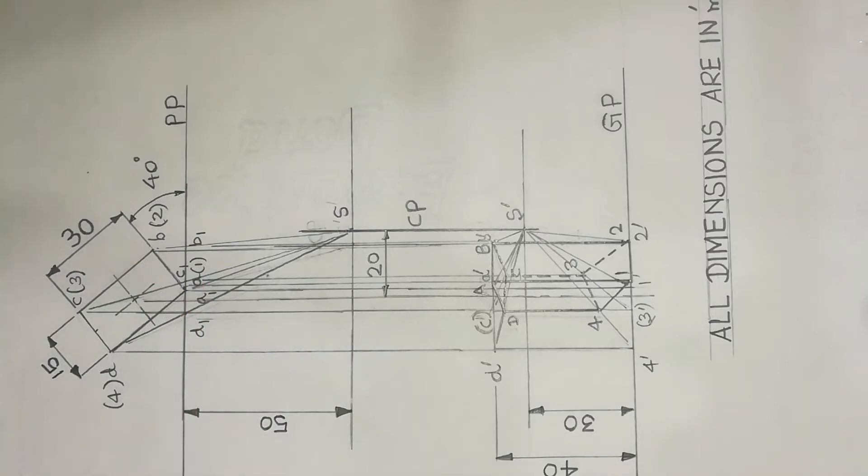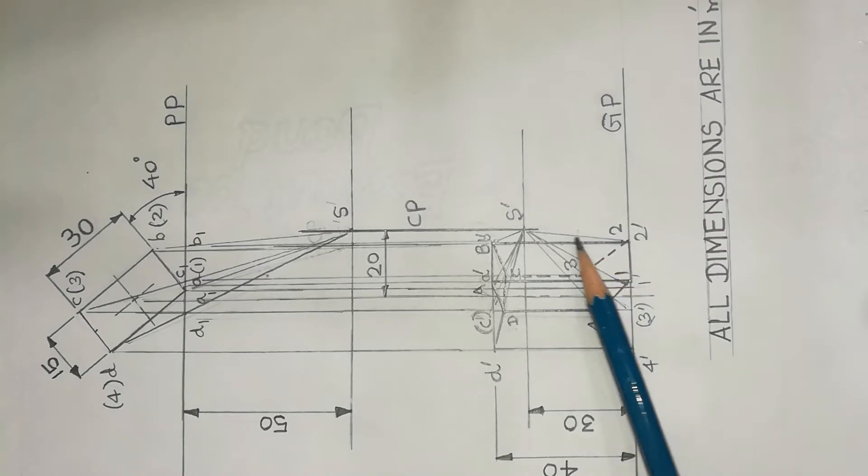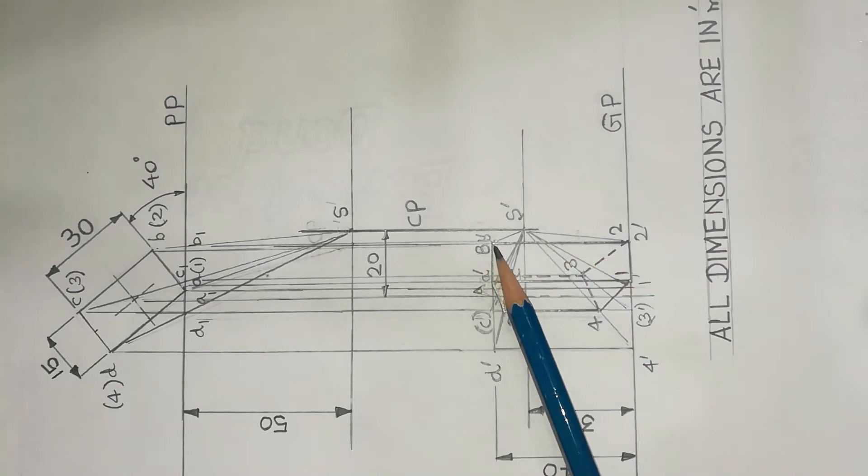One of the longest edges touching the picture plane - this is the point, the touch point on the PP. This is important. This is the front view, with corners labeled D dash, four dash, two dash, B dash.